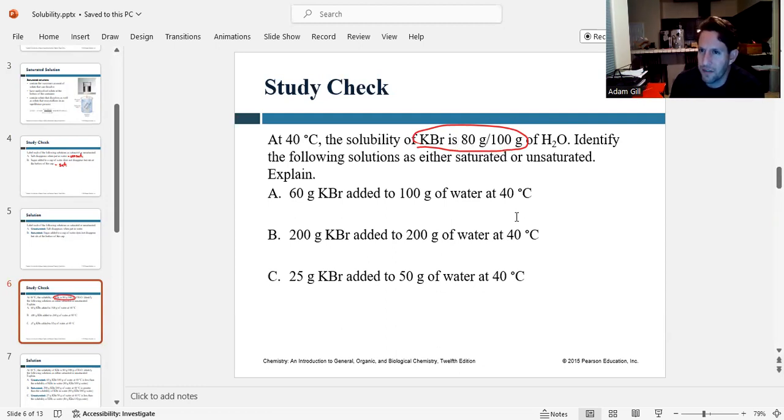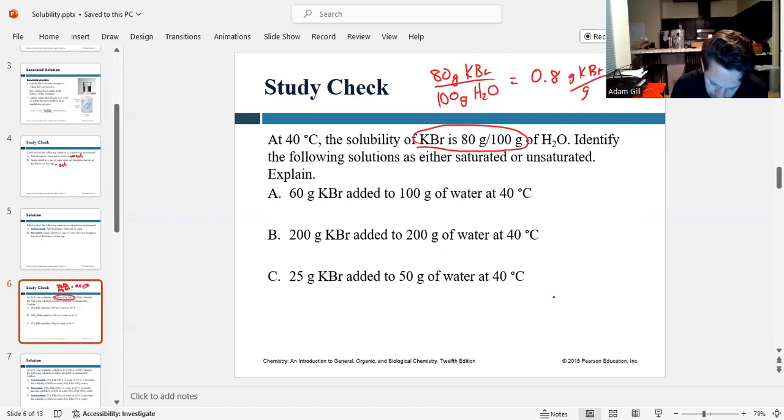Whenever they give you an amount, a solubility amount, you can express this as a decimal, and that might be easier for comparisons. So if we have 80 grams of KBr per 100 grams of H2O, you can express that as decimal 0.8 grams of KBr per gram of H2O. So 0.8.